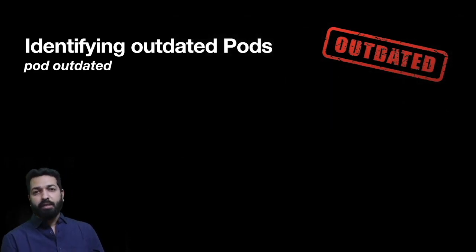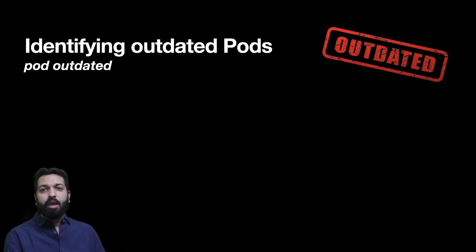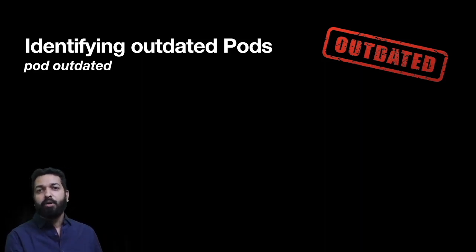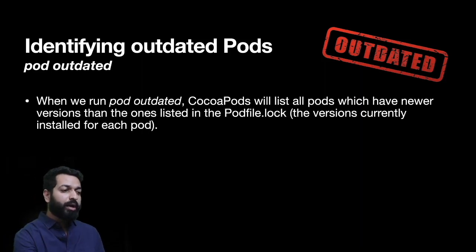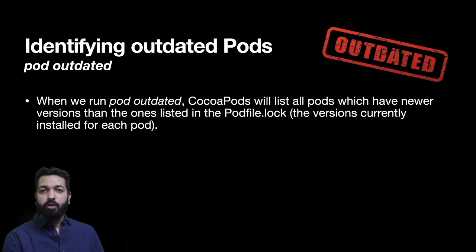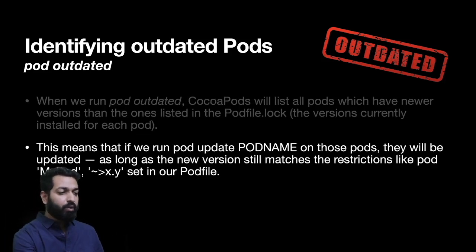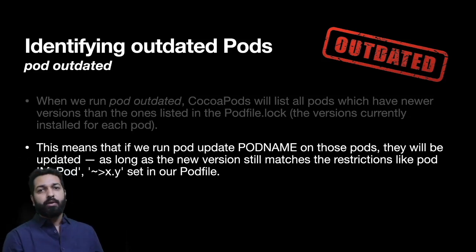Now comes identifying outdated pods. The maintainers of pods keep publishing newer versions with bug fixes and new features, so the version installed on your local machine can become outdated. To update, you must first know whether your installed version has been outdated. The command pod outdated will list all pods for which a newer, higher version is available. It will not automatically update any pod — it just tells you that a newer version exists. Then if you choose to update that particular pod, the newer version will be downloaded.